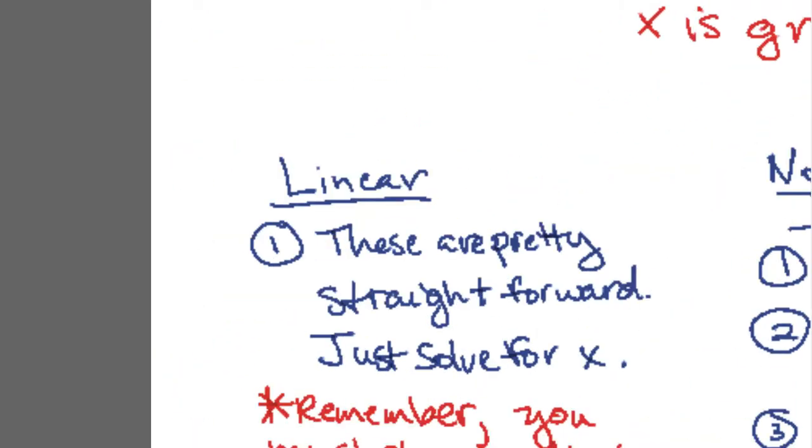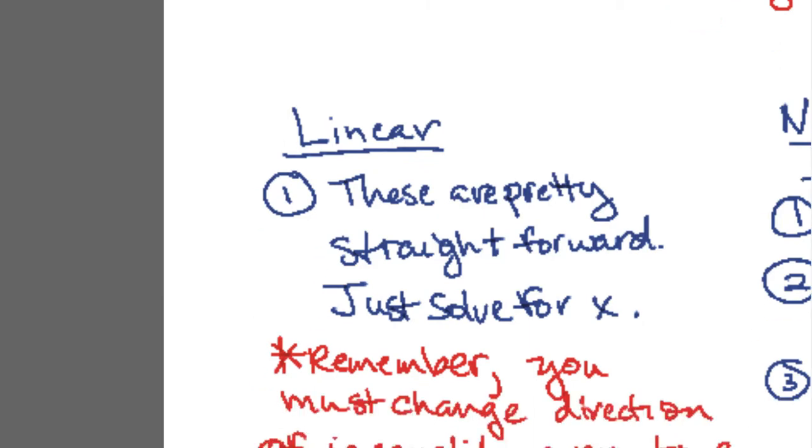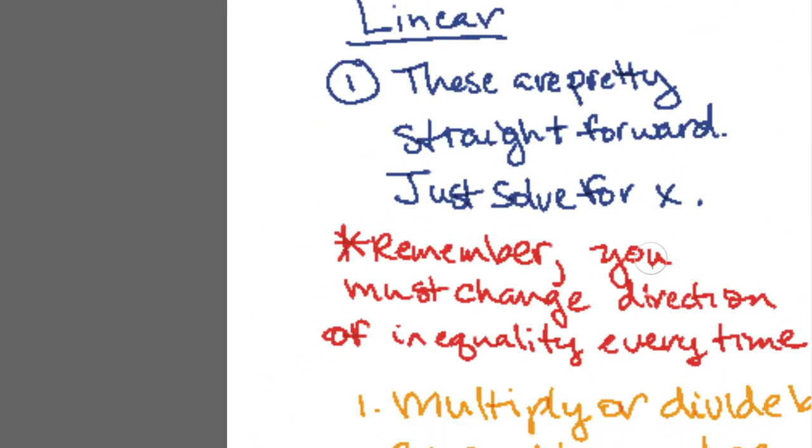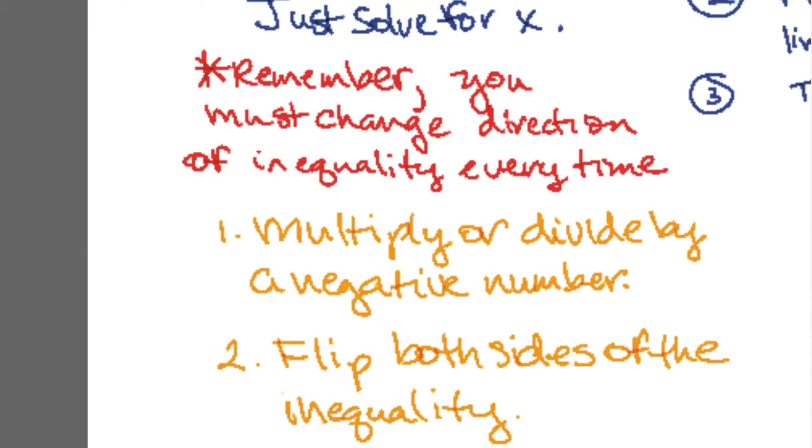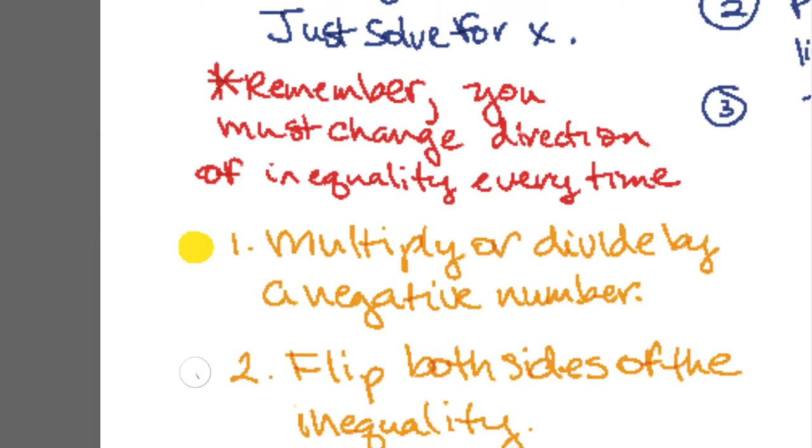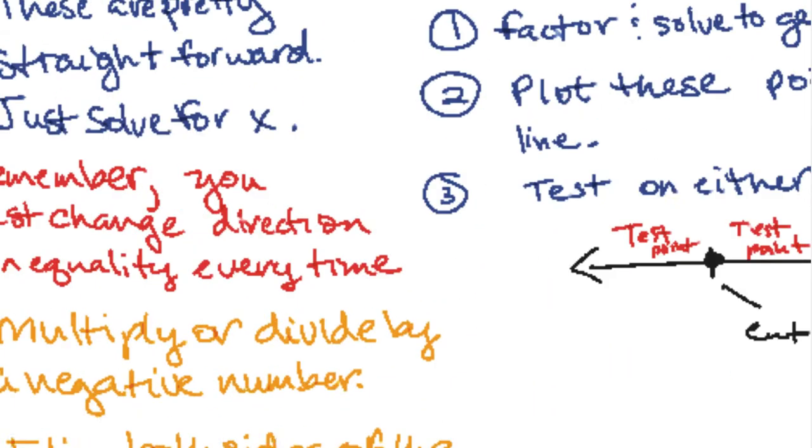So let's look at linear first. Linear, like I said before, you just solve for x and you're good to go. Make sure that you remember whenever you either multiply or divide by a negative number or if you flip both sides of the inequality, you have to change the direction of the sign. So in other words, less than should become greater than or switch to greater than switch to less than, whatever it is. Just change the direction.